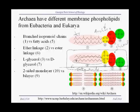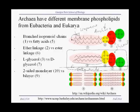But in archaea, their hydrocarbon chains are built from what are called isoprenoids or isoprene subunits, which is a five-carbon molecule. There is an isoprene chain with one, two, three, four, five carbons — it's branched — and these are strung together. So the biochemistry of these fatty acid tails is completely different from the biochemistry of the fatty acid chains in bacteria and eukaryotes.